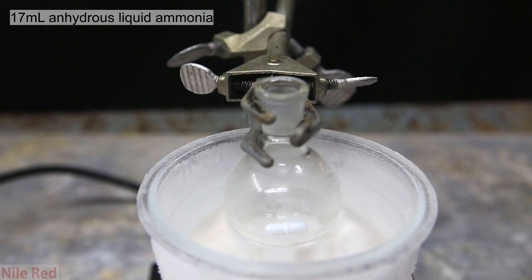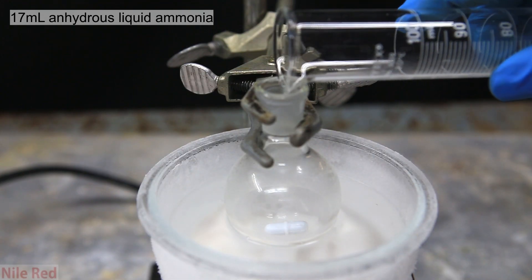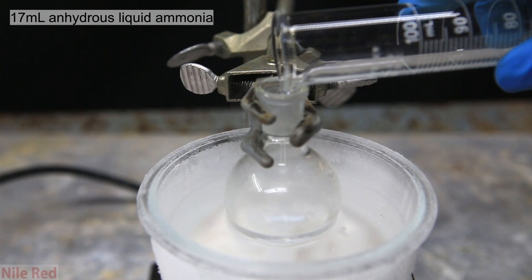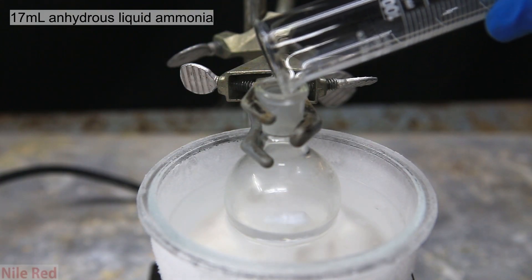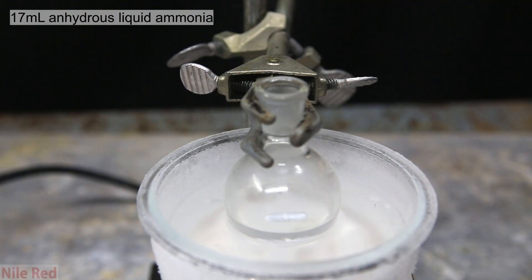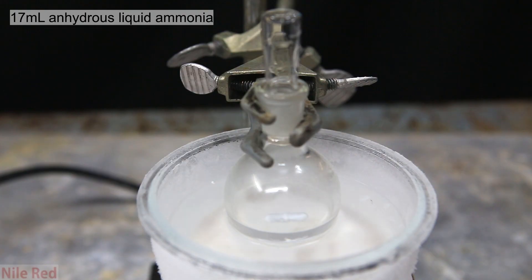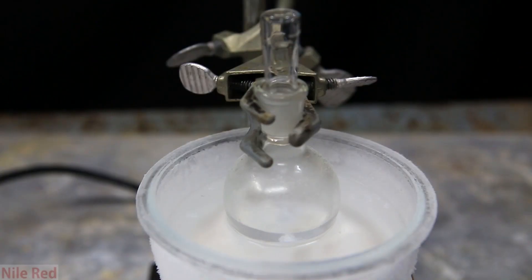I started off by adding 17 milliliters of anhydrous ammonia to a cooled round bottom flask. The round bottom flask is cooled by filling the bowl with some dry ice and then pouring in some acetone. To limit the loss of ammonia we cap it in between additions and then we start a little bit of stirring.